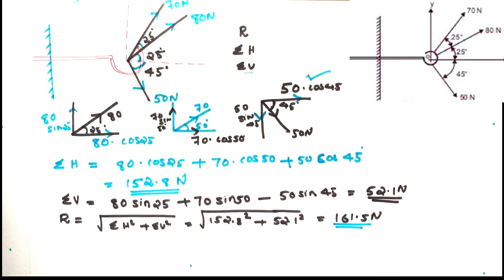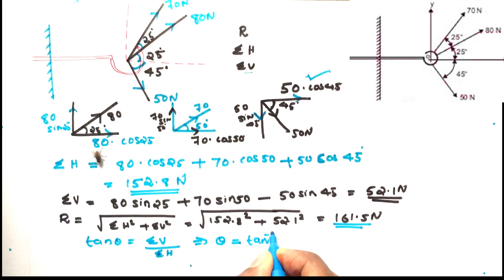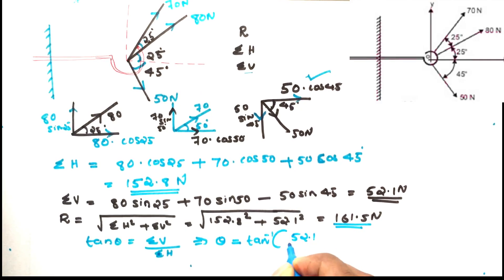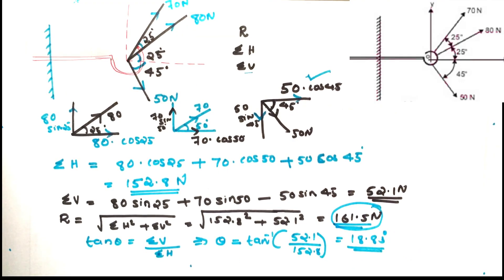Then we find the resultant direction. Tan theta is equal to Sigma V divided by Sigma H. So theta equals tan inverse of 52.1 divided by 152.8, which gives 18.83 degrees. Therefore, the resultant is 161.5 Newtons at an angle of 18.83 degrees.